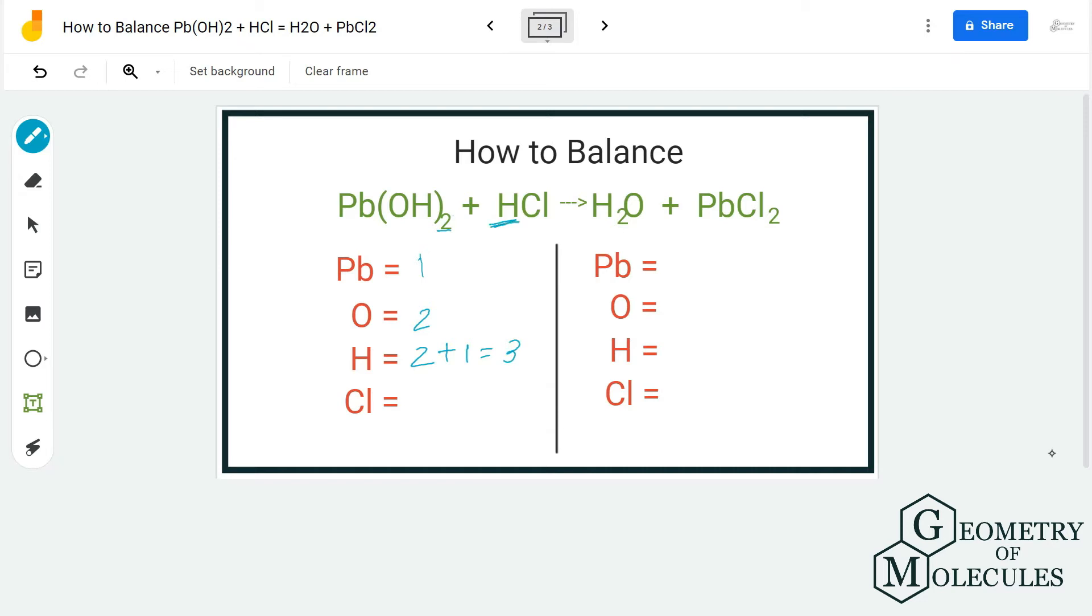Do not forget these hydrogen atoms and always make sure to count every atom on both sides. So we have three hydrogen atoms and we have one chlorine atom. Now reactant side is done.